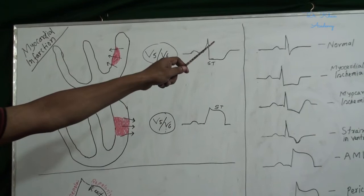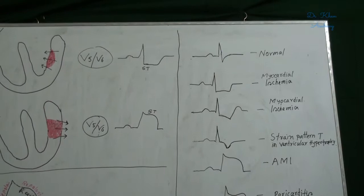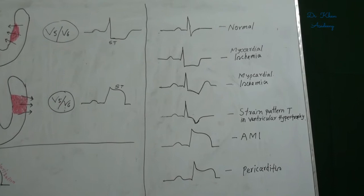Third figure shows downward sloping ST segment depressions that indicates also myocardial ischemia.